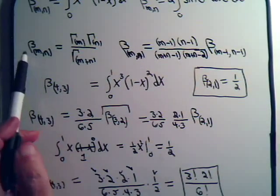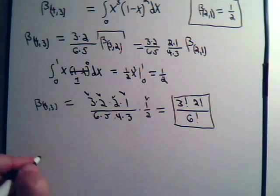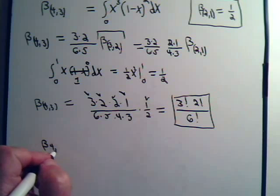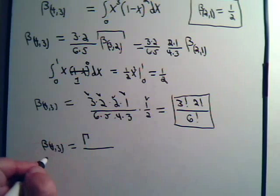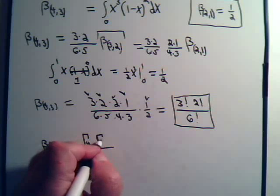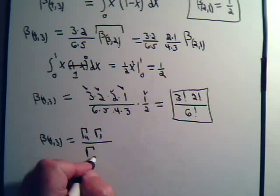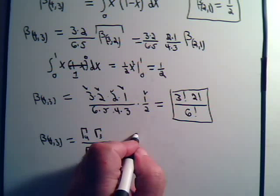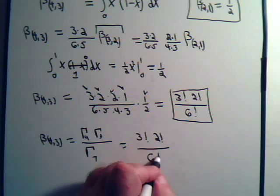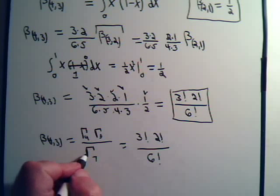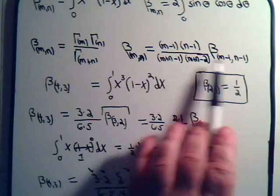If we had applied the relationship between the beta and gamma functions directly, we would have said beta(4,3) equals gamma(4) times gamma(3) divided by gamma(7), which is 3 factorial times 2 factorial divided by 6 factorial. So we went the long way around just to show how to apply the reduction formula in practice.